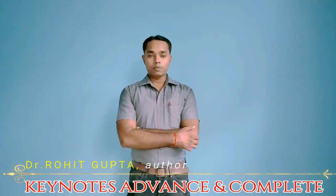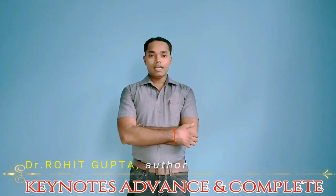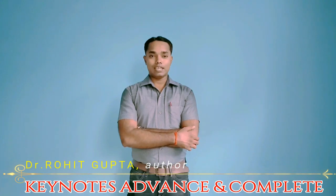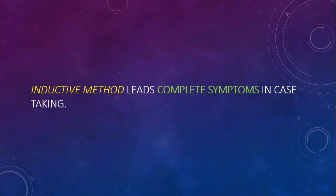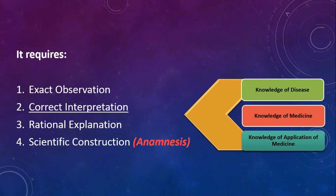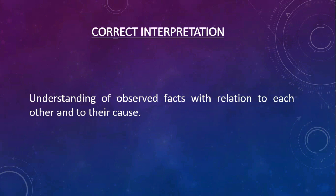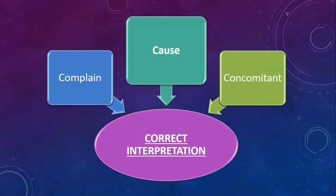Correct interpretation is as important as observational skill in homeopathic practice. For exact understanding of cases, in correct interpretation the observed facts need analysis — with understanding them in relation to each other and to their cause. Correct interpretation contains three parts: cause, complaint, and concomitant.